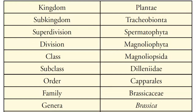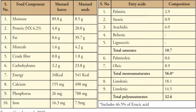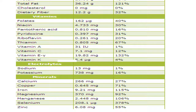Regarding nutritional composition, the erucic acid content is 46.5%, cholesterol is 0%, and dietary fiber per 100 grams is 12.2 grams, which is 32% of the daily requirement. Rapeseed and mustard are also a rich source of micronutrients like vitamins, electrolytes, and minerals.